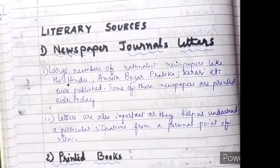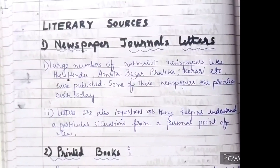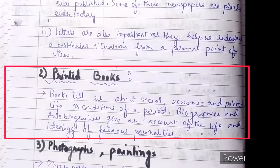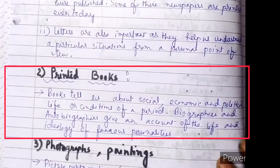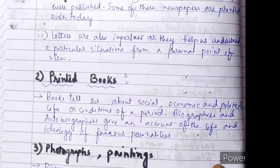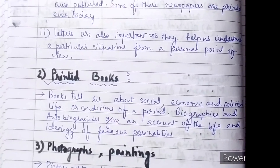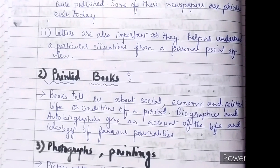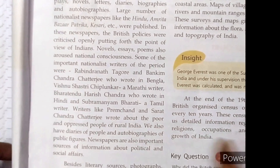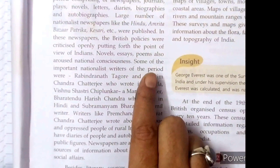Letters are also important as they help us to understand a particular situation from a personal point of view. Books tell us about social, economic, and political life or conditions of a period. Biographies and autobiographies give an account of the life and ideology of famous personalities. We can see some of the nationalist writers of that time.